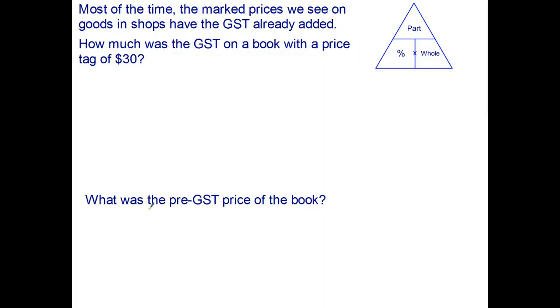Here's how it basically works. We start with the whole amount, what the retailer wants to get, and that of course is going to be 100%. Onto that 100%, we're going to add 10% GST. So 100% plus 10% means the cost to the customer is going to be 110% of the amount that the retailer wants.